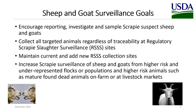Activities for sheep and goat surveillance include encouraging reporting, investigation, and sampling of scrapie suspect sheep and goats, collecting all targeted animals regardless of traceability at regulatory scrapie slaughter surveillance sites, maintaining current and adding new RSS collection sites, and increasing scrapie surveillance of sheep and goats from higher risk and underrepresented flocks or populations and higher risk animals such as mature found dead animals found on farm or at livestock markets.